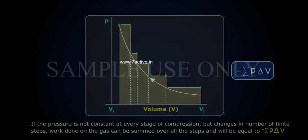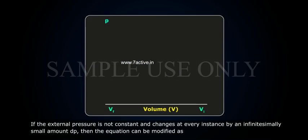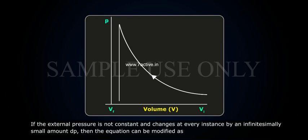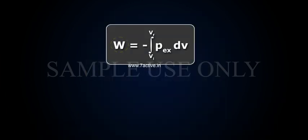If the external pressure is not constant and changes at every instance by an infinitesimally small amount, DP, then the equation can be modified as work done equals to minus of integral initial volume to final volume into external pressure into change in volume.